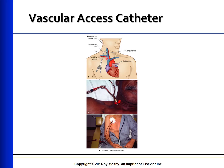Long-term cuffed hemodialysis catheters are often used for temporary vascular access. These catheters provide temporary access while the patient is waiting for a fistula placement, or long-term access when other forms of access have failed. This type of catheter is tunneled subcutaneously to the internal or external jugular vein, with the catheter tip resting in the right atrium. It has one or two subcutaneous Dacron cuffs that prevent infection from tracing along the catheter and anchor it, eliminating the need for sutures.